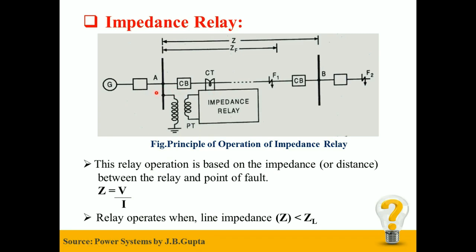The protection zone of line is between point A and point B. If the fault occurs between point A and B, the impedance relay can provide the protection. But if the fault occurs beyond point B, then impedance relay cannot provide the protection.